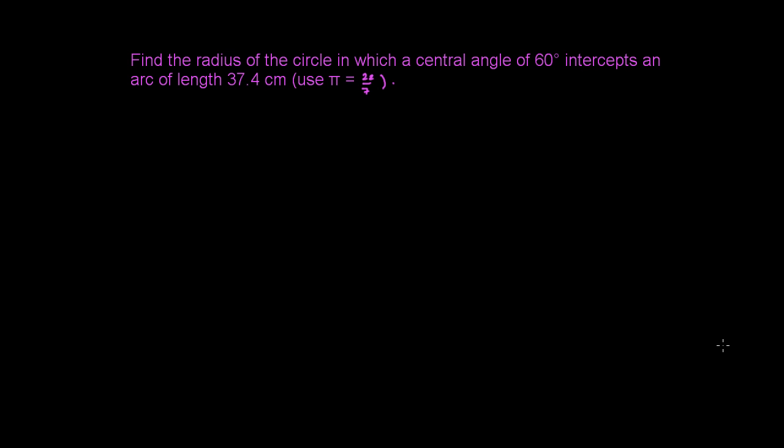Based on the concept of degree and radian, we have a question here. Find the radius of a circle in which a central angle of 60 degrees intercepts an arc of length 37.4 cm. Use π as 22/7.